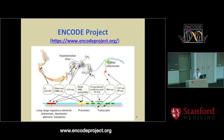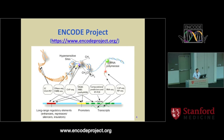The ENCODE project — I think everyone here knows — its purpose is to identify functional elements, and it has a lot of sequencing data. Here I want to focus on the RNA-seq data, which I use to study alternative splicing.